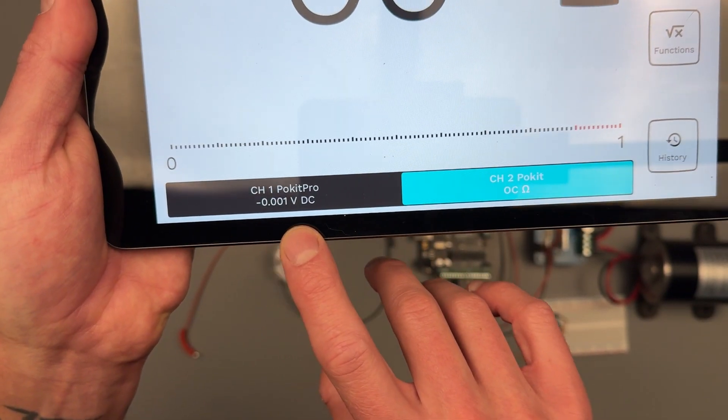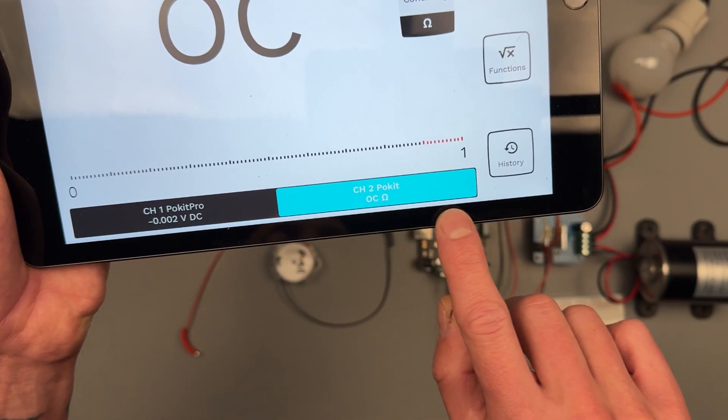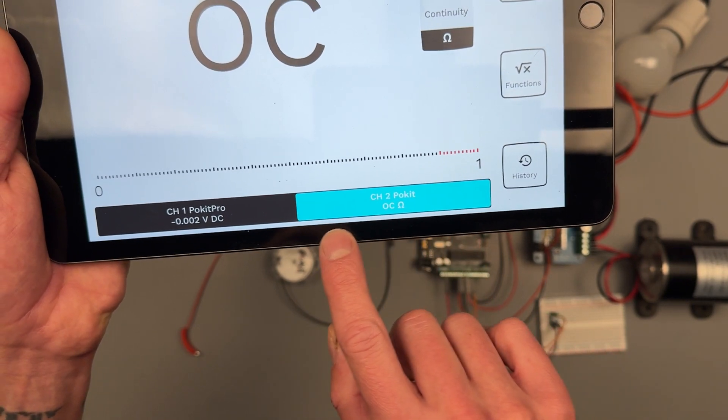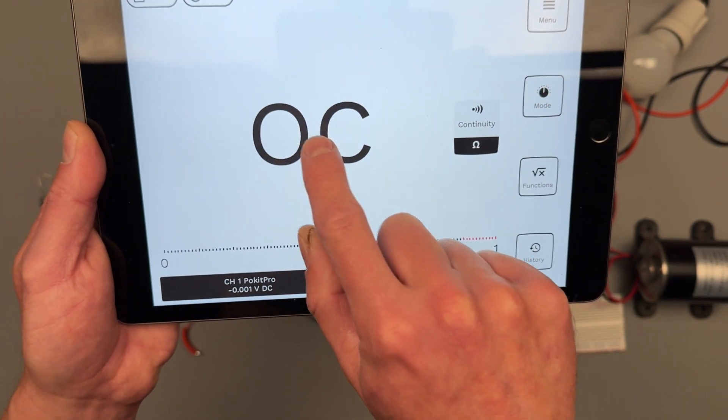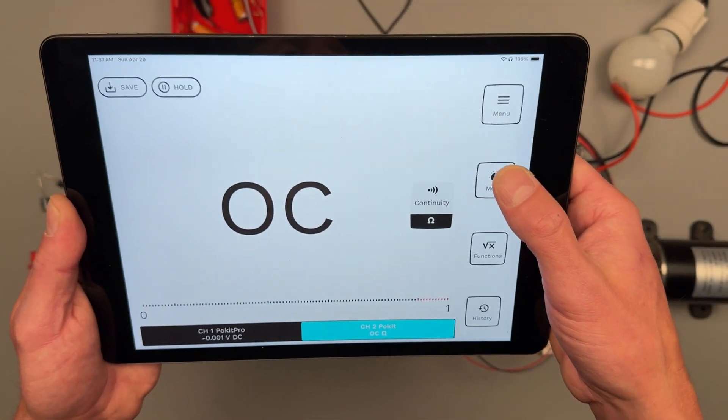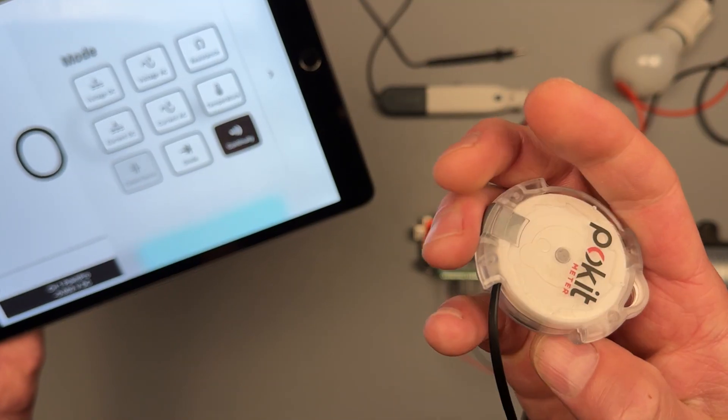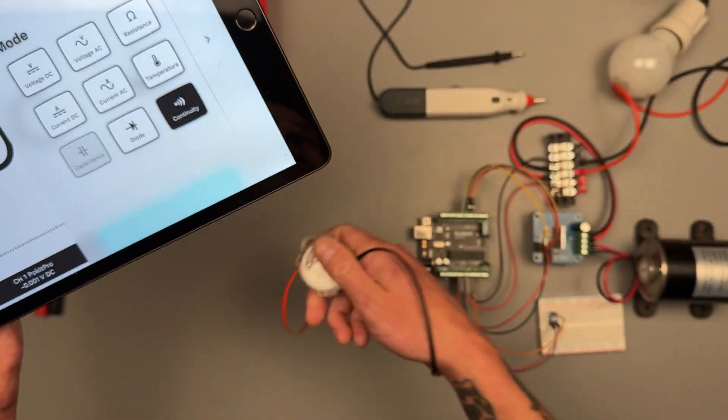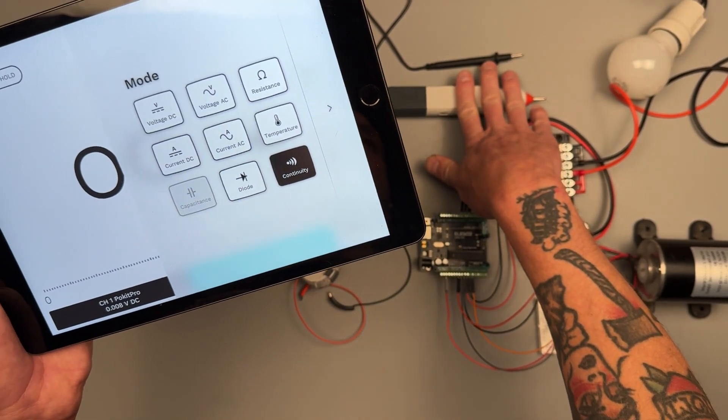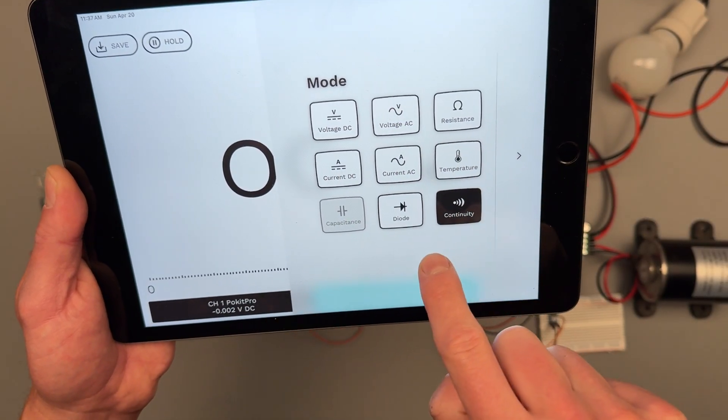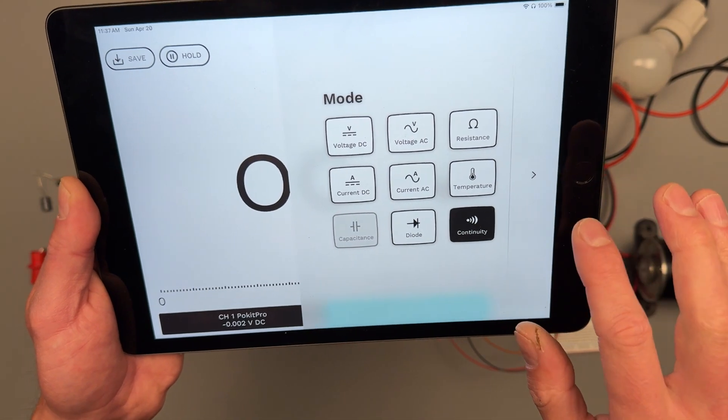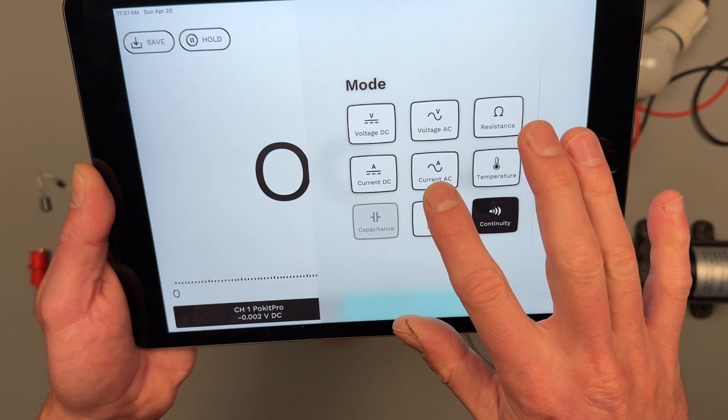Then you can see my pocket pro's measurements will still show up down here in this black bar and it's highlighted in turquoise letting me know that my pocket meter is the one selected for the main screen. We can also go over to mode and we can see there's no selector on the pocket meter itself - there's no selector switch like there would be on the pocket pro. It just defaults to everything that you have available to you.